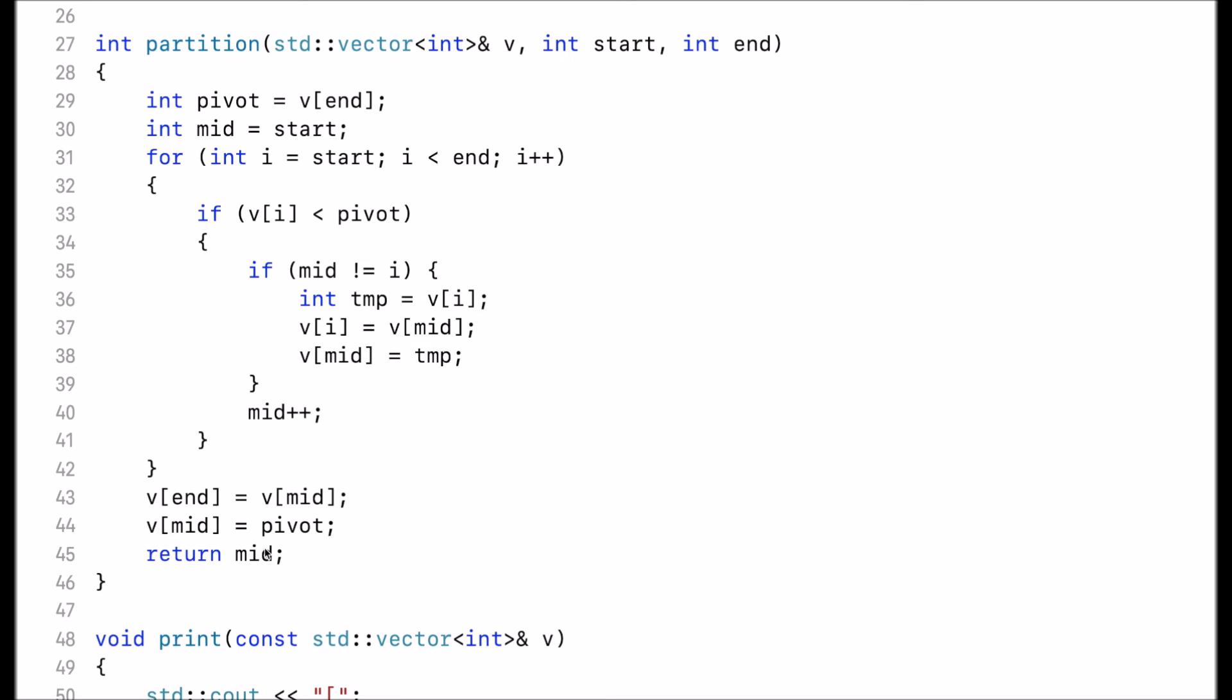So again, mid is basically the pivot element. All the elements to the right are larger or equal to, and all the elements to the left are smaller.